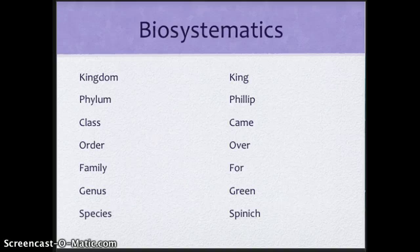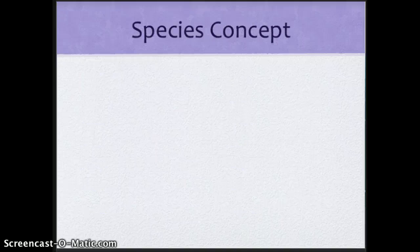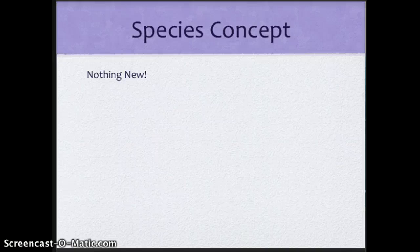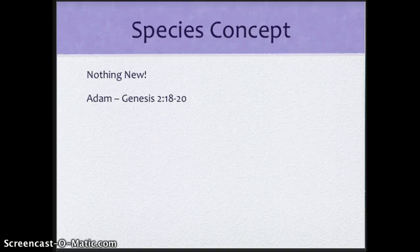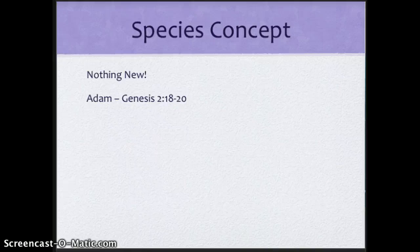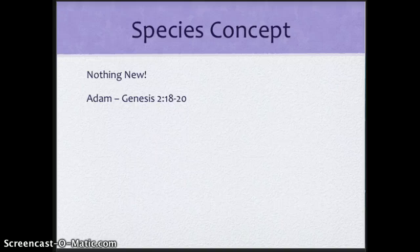You know, this whole idea of a species concept is really nothing new. I mean, Solomon said it best. There is nothing new under the sun. In fact, the whole idea of classifying starts right with Adam. Back in Genesis 2:18 through 20, Adam is talked to by God, and what's his first job? To name the living organisms, i.e., the first classification system.